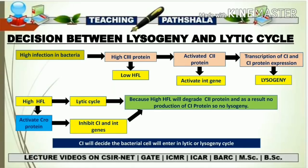Now, if by any condition the HFL concentration is high, it promotes the lytic cycle. High HFL activates the Cro protein, and Cro protein represses C1 and INT genes — the main factors for the lysogenic cycle. Furthermore, because of high HFL, the C2 protein is degraded via the FTSH protease coded by the HFL gene. Since C2 is degraded, C1 protein is not produced, INT gene has no expression, and as a result there is no lysogenic cycle — the lytic cycle occurs instead.